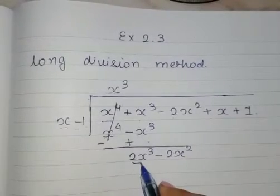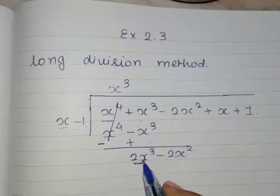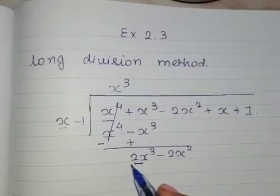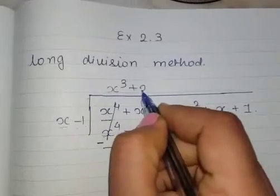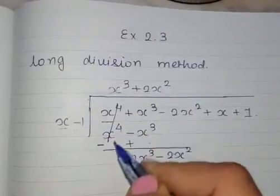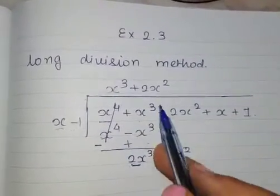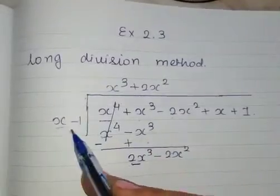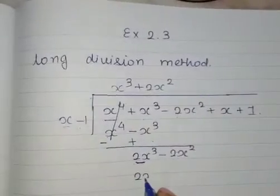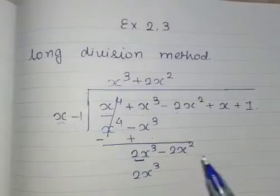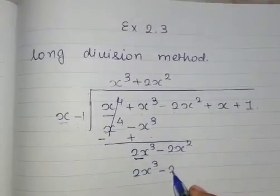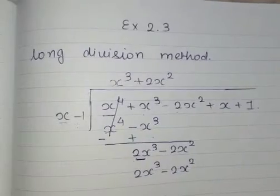Now consider this first term. With what we need to multiply X to get 2X cube? It is plus 2X square. So 2X square into 2X will give us 2X cube, and 2X square into minus 1 will give us minus 2X square.